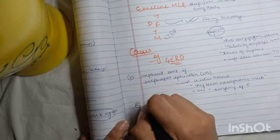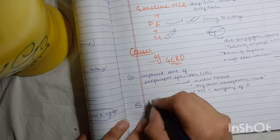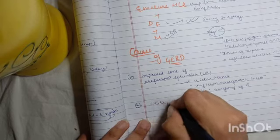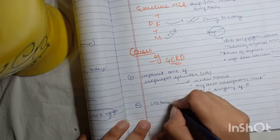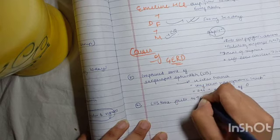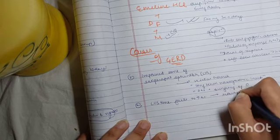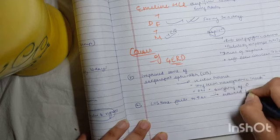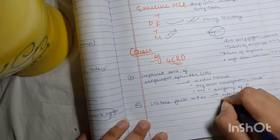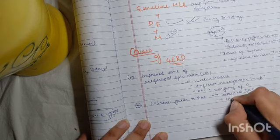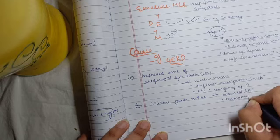Then when the tone fails to increase. So the lower esophageal sphincter LES tone fails to increase because of the raised intra-abdominal pressure. Now this is basically during pregnancy, obesity.